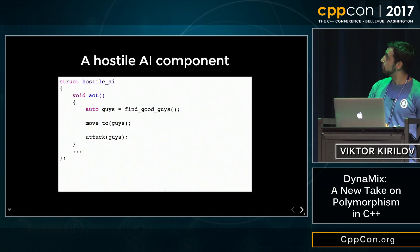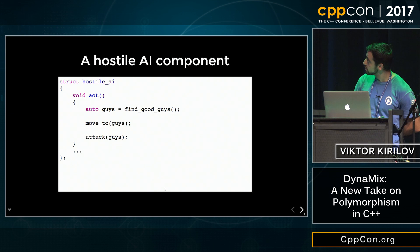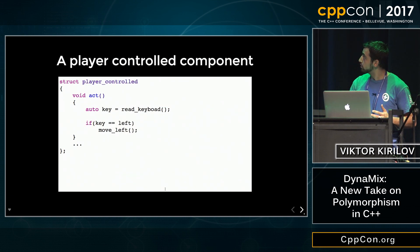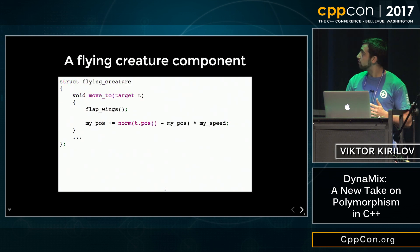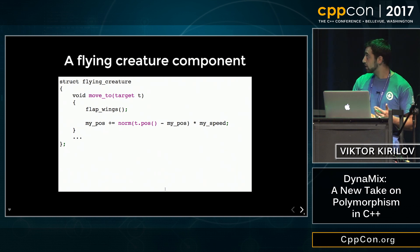Suppose we have a hostile AI component which has an act method in which we find the good guys, we move to them, and then we attack them. We also have a player controller component which has an act method where we read some keyboard input and maybe move to the left. We also have a flying creature component which has a move method in which we flap our wings and possibly update our position.